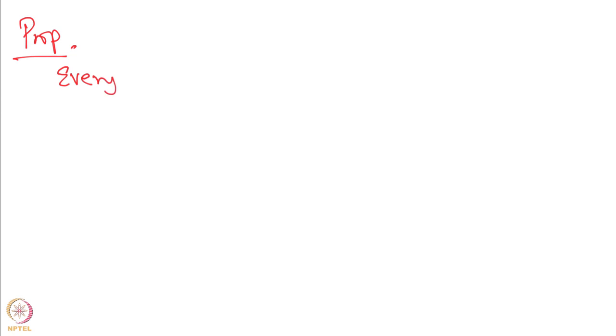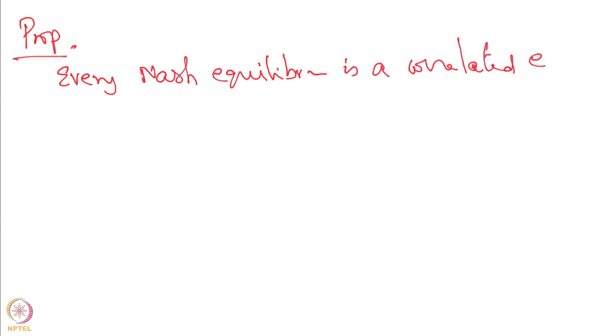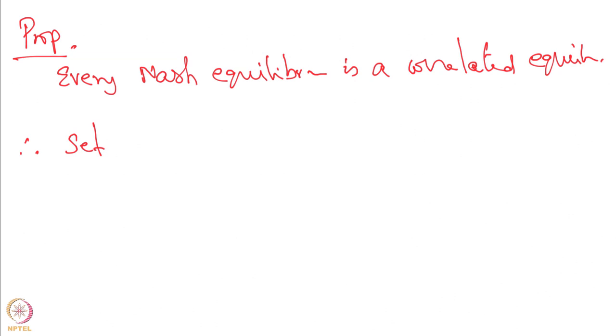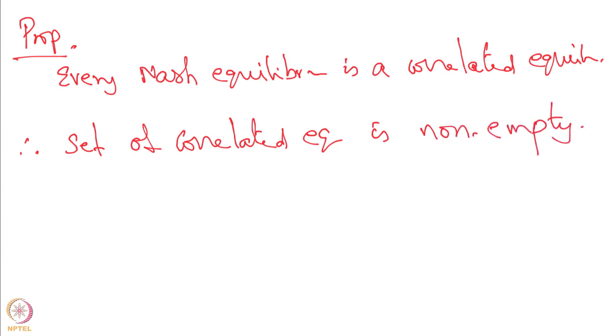For finite games the set of correlated equilibria is both convex and compact. Another important result: every Nash equilibrium is a correlated equilibrium. This is not hard to prove and is left as an exercise. The key point is that a Nash equilibrium is a correlated strategy where the joint distribution is simply the product of the individual marginals — there is no real correlation. Therefore, every Nash equilibrium is a correlated equilibrium, which implies the set of correlated equilibria is always nonempty.